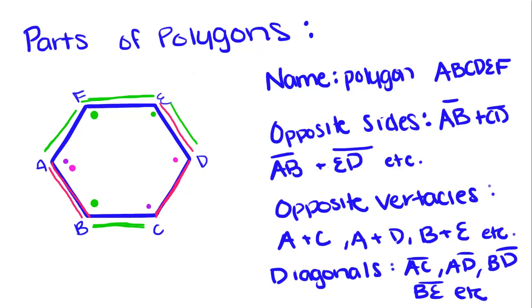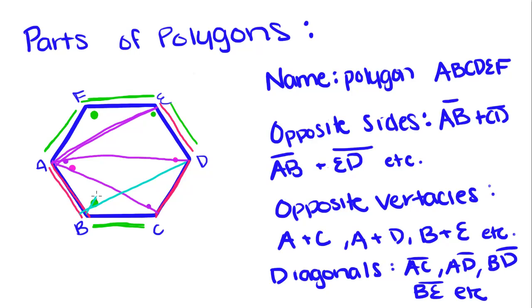And diagonals are the line that you can draw across opposite vertices. So our first diagonal goes from A to C, connecting those vertices. Our second one goes across the polygon to D, and up to E. B and D, B and E, B and F, C and F, C and E — those are all diagonals of the polygon, which are formed by connecting opposite vertices.